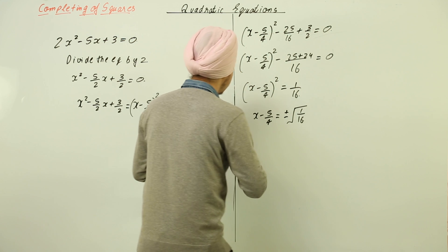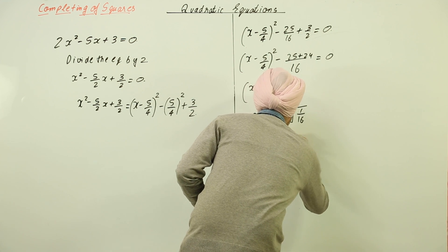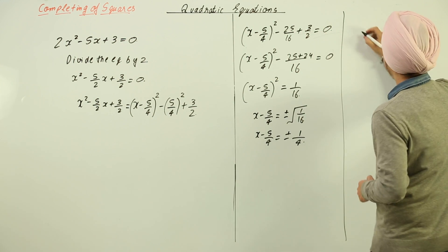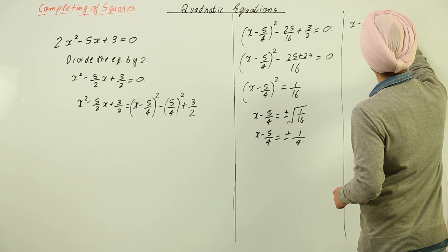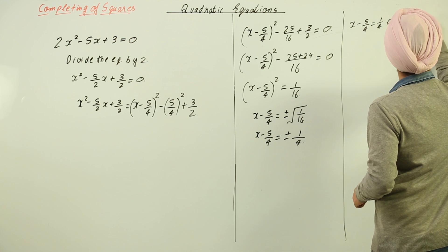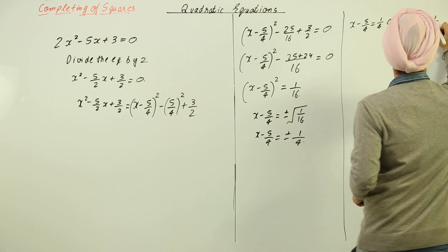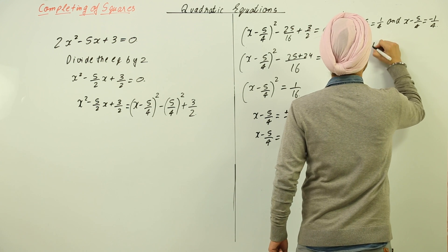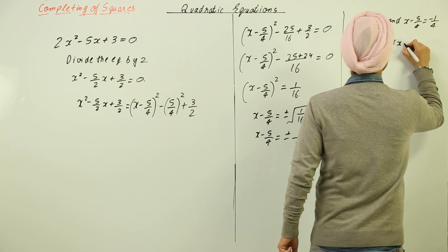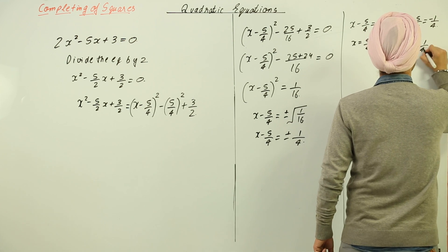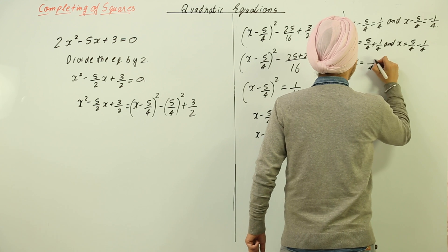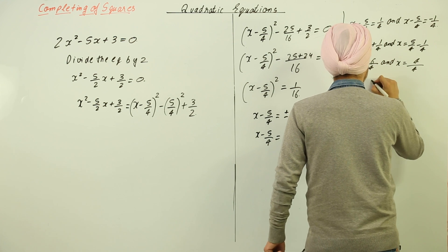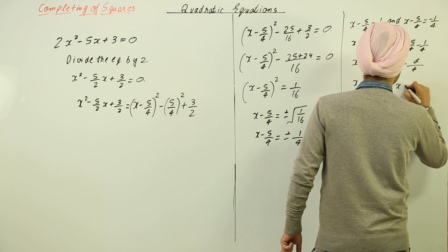So x minus 5/4 equals plus or minus 1/4. This gives two solutions: x minus 5/4 equals 1/4, giving x equals 5/4 plus 1/4 equals 6/4 equals 3/2; and x minus 5/4 equals minus 1/4, giving x equals 5/4 minus 1/4 equals 4/4 equals 1.